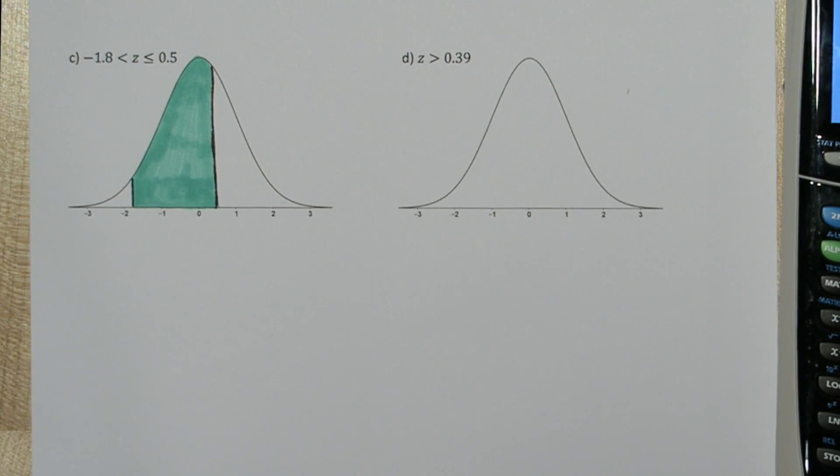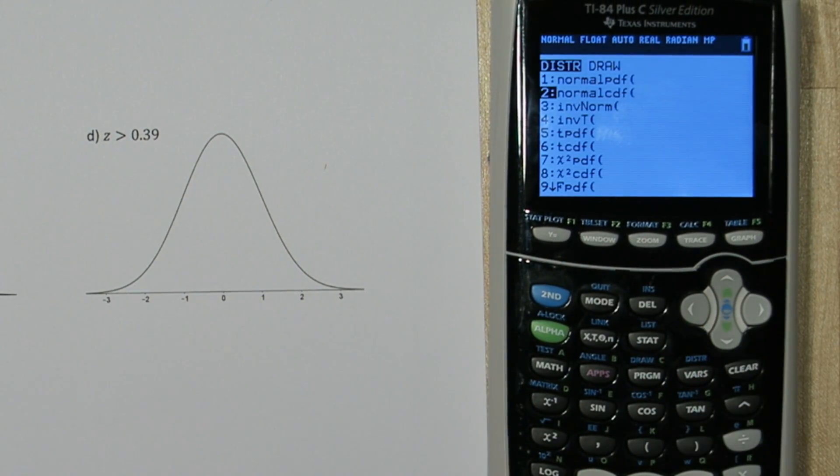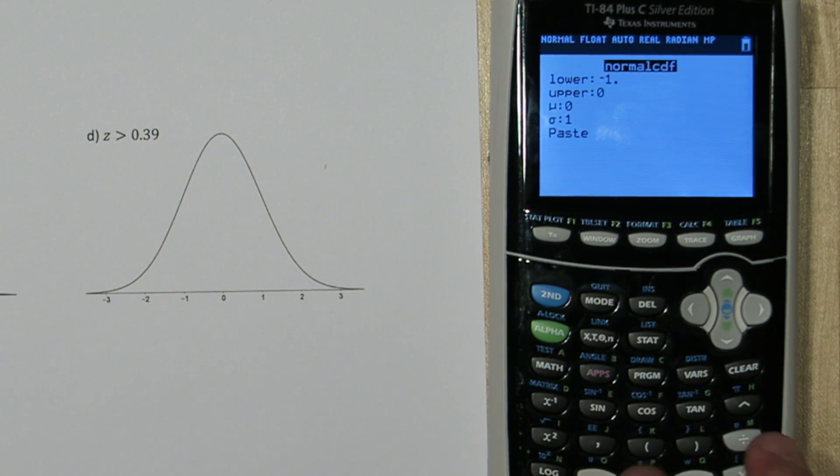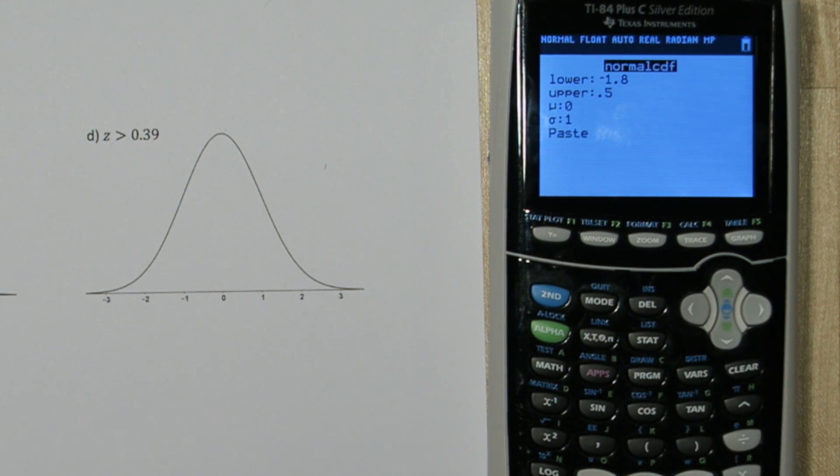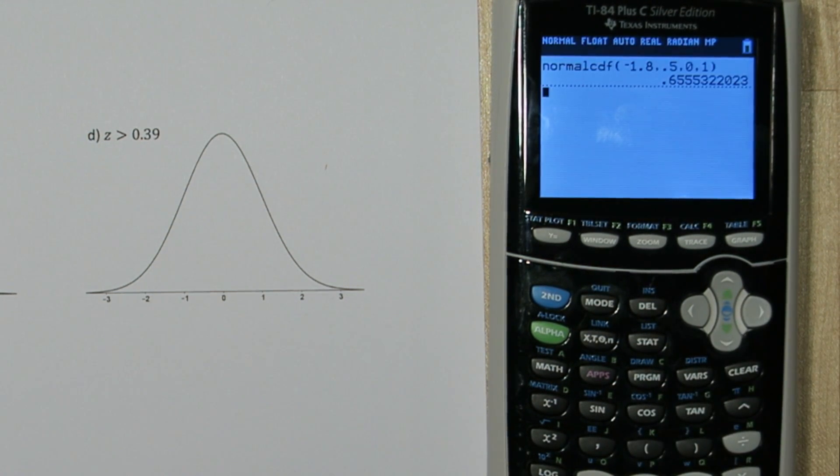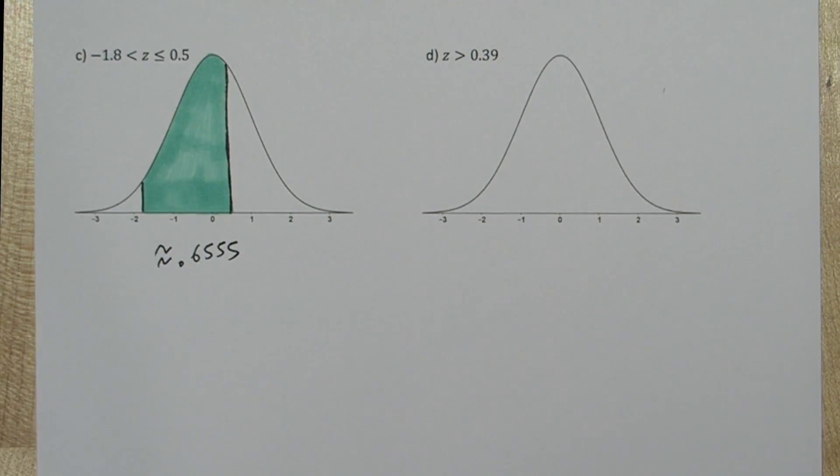By looking at the curve, you might have a guess, but let's press 2nd, VARS, to get to our distribution menu. We'll select normalcdf again. Our lower limit this time is negative 1.8, and our upper limit is 0.5. We'll leave the mean and standard deviation as standard normal, 0 and 1. So our area this time is approximately 0.6555.